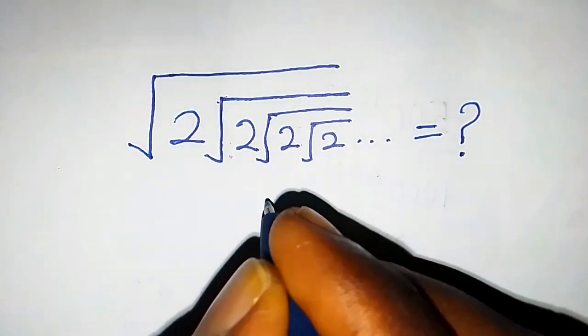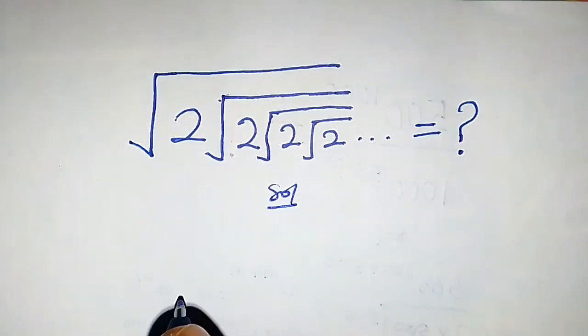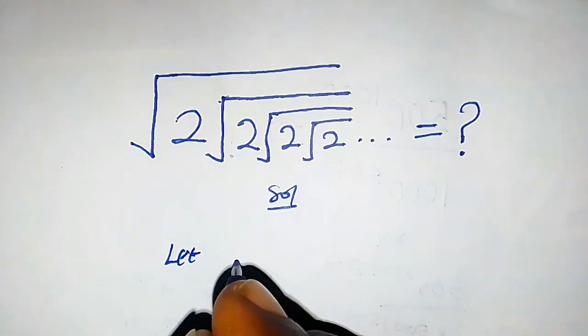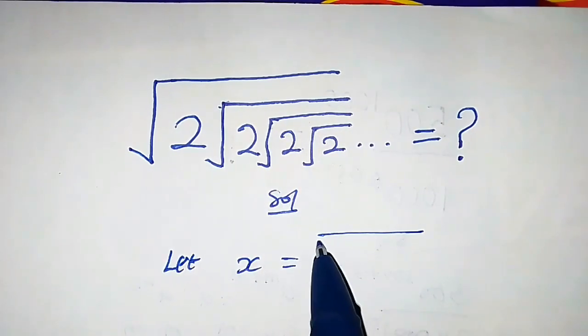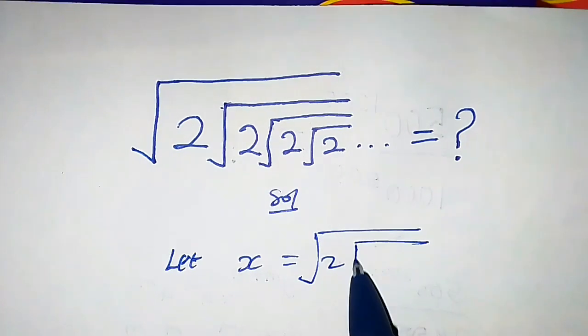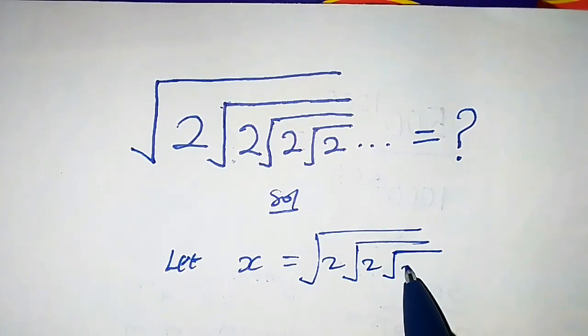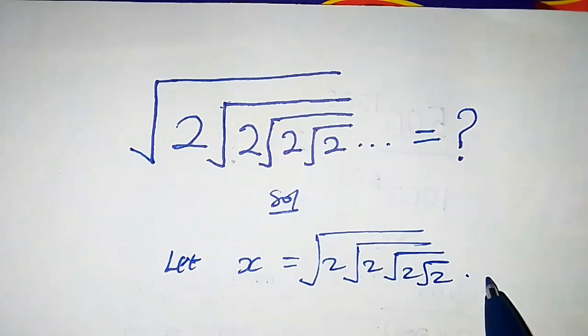How do we solve this embedded root solution? Let x be equal to square root of 2 times square root of 2, square root of 2, square root of 2, and so on.